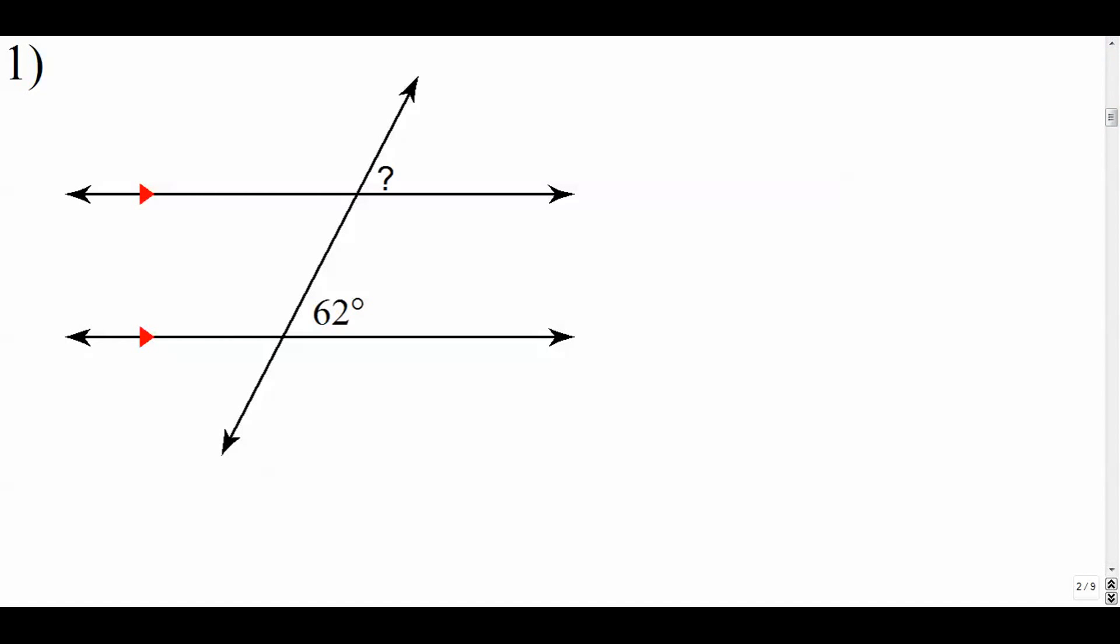Let's start with number one. I want you to identify the type of angles that we're looking at. This angle right here and this angle right here. Those angles are in the same position. They're both on the right side of our transversal and they're both above each parallel line. We call those corresponding. These angles are corresponding and they are congruent. So this measure is 62 degrees. Corresponding angles are congruent.